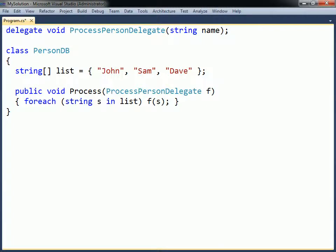The first one is a data storage class called PersonDB, which has an array containing a couple of names. It also has a method that takes a delegate object as its argument and calls that delegate for each name in the array.